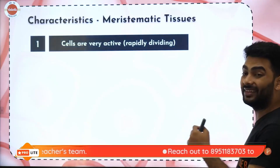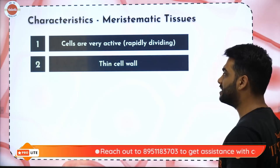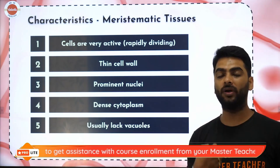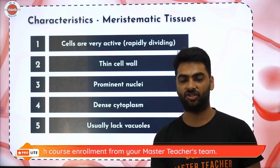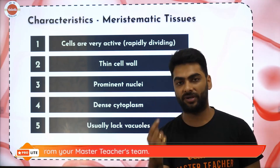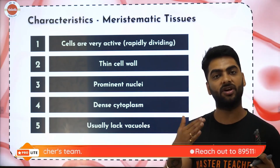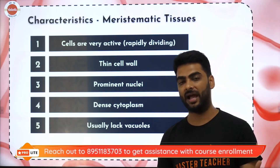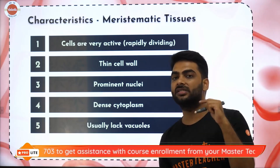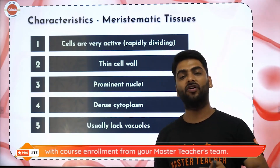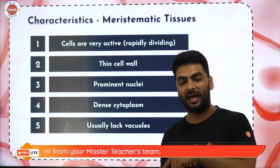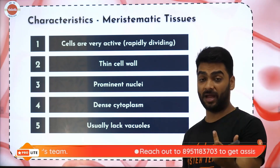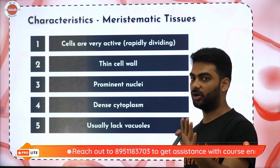Characteristics of meristematic tissues are that they rapidly divide, they have thin cell walls, they have a prominent nuclei, dense cytoplasm, and usually lack vacuoles. These are the dividing cells and that is why they undergo rapid cell division. They have a very thin cell wall because their function is not protection or support — their function is just growth. They have a very prominent nuclei because these tissues have continuous activity to perform and need to be very efficient — the nucleus is the CPU. They have a very dense cytoplasm with mitochondria and organelles, and they lack a vacuole.